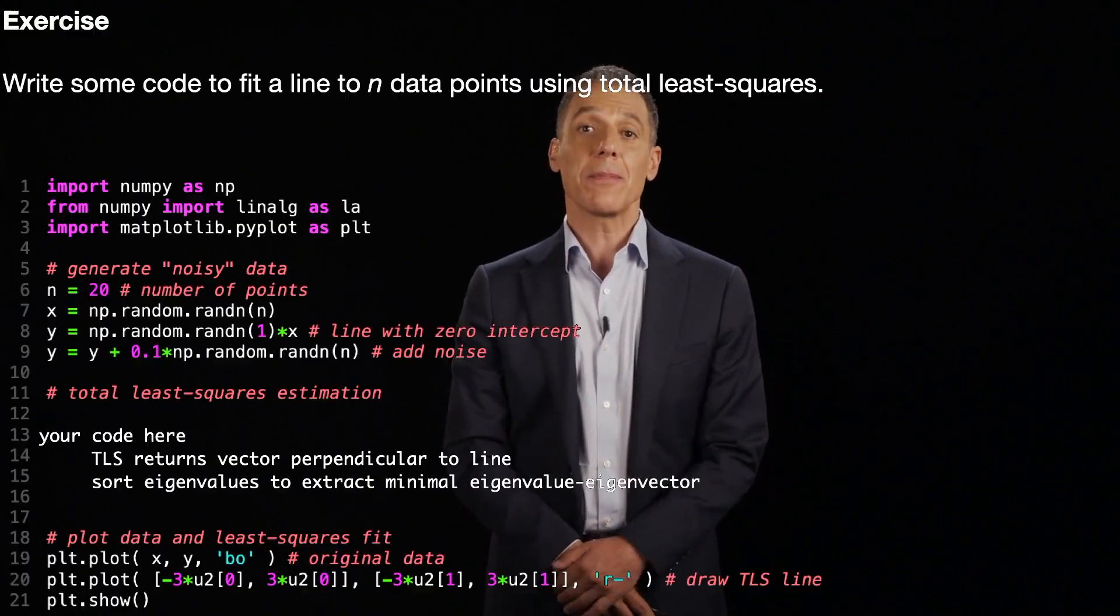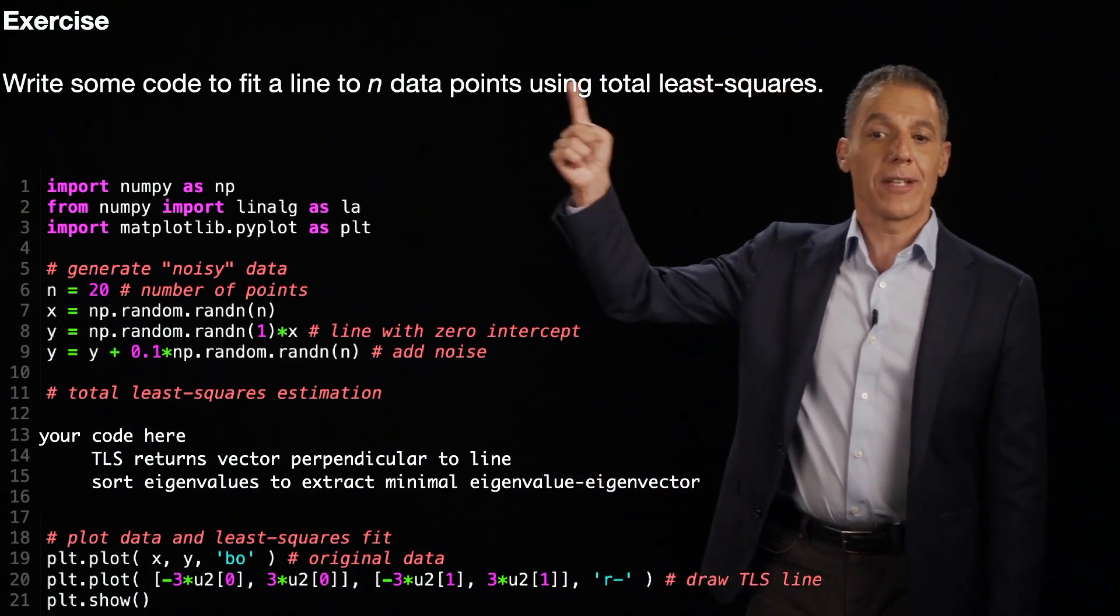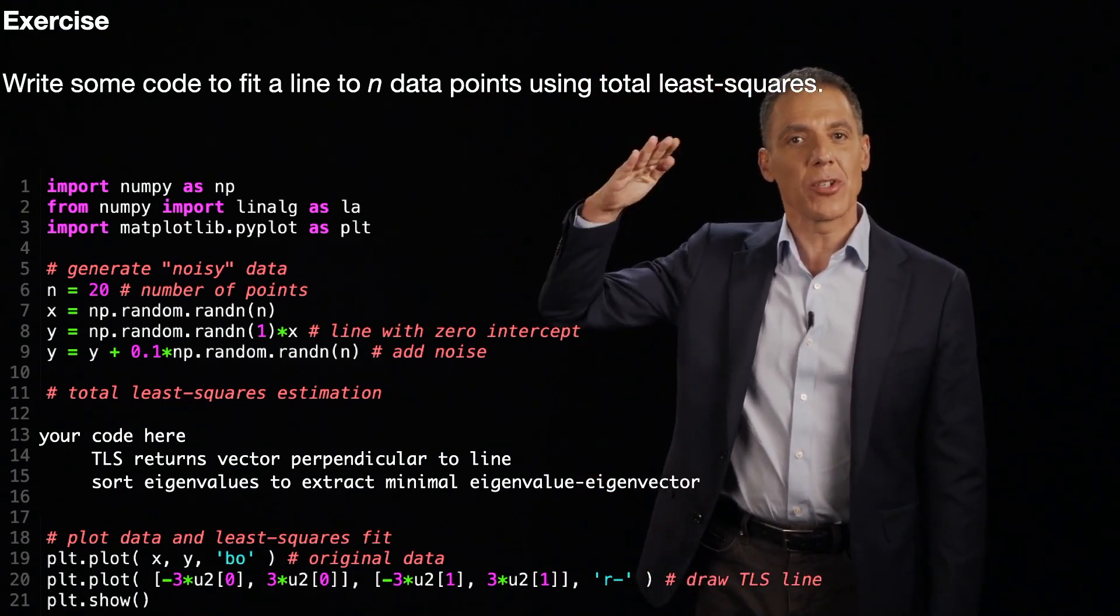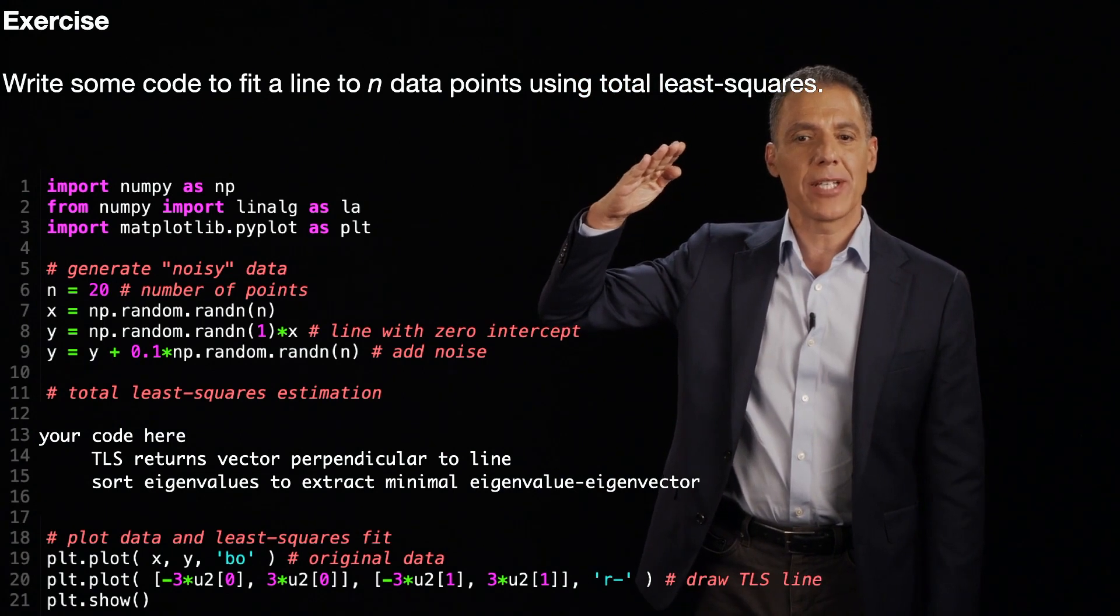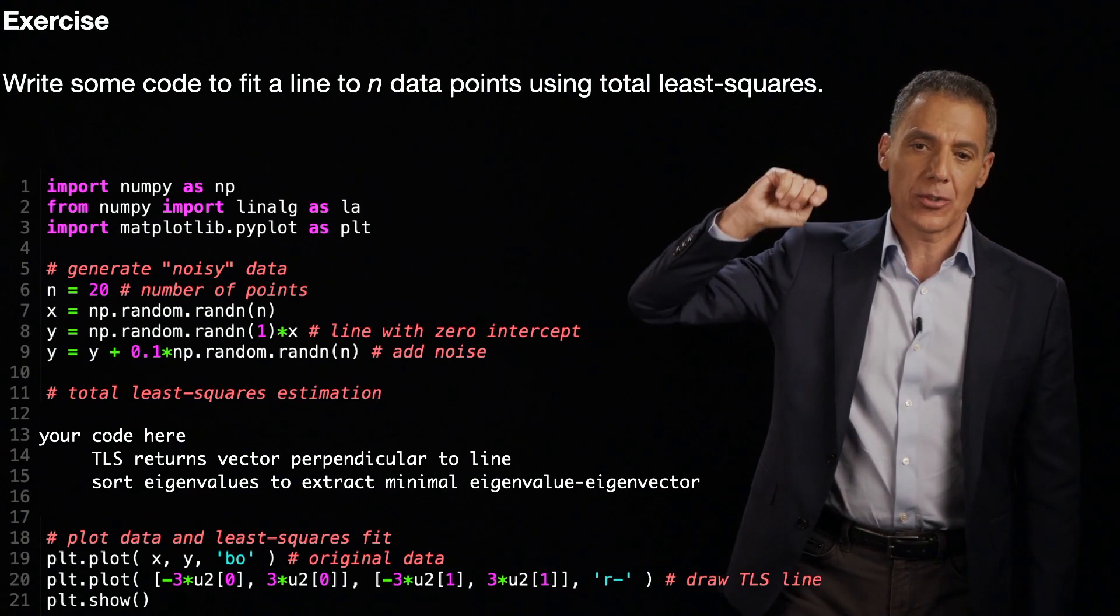We're now ready to implement total least squares. As before, I'm going to give you some scaffolding. Please write some code to fit a line with just the slope. You're going to estimate that AB parameter, the perpendicular vector, to n data points using total least squares.